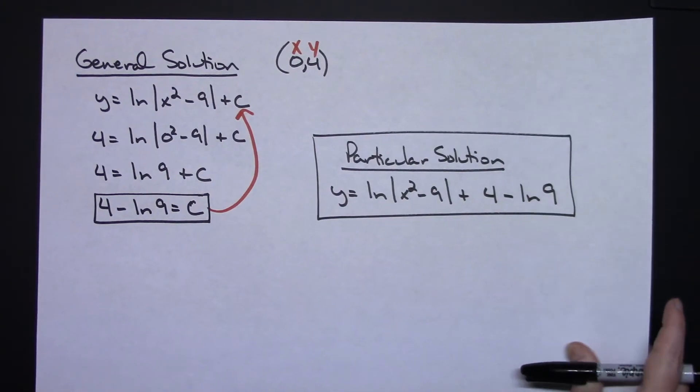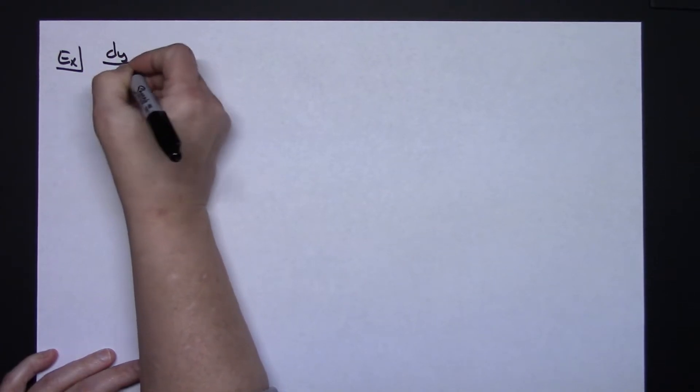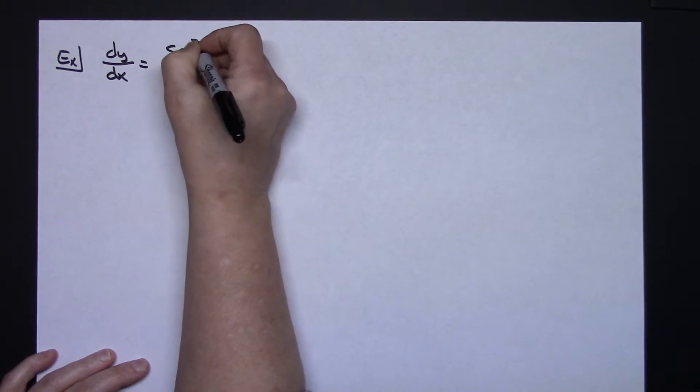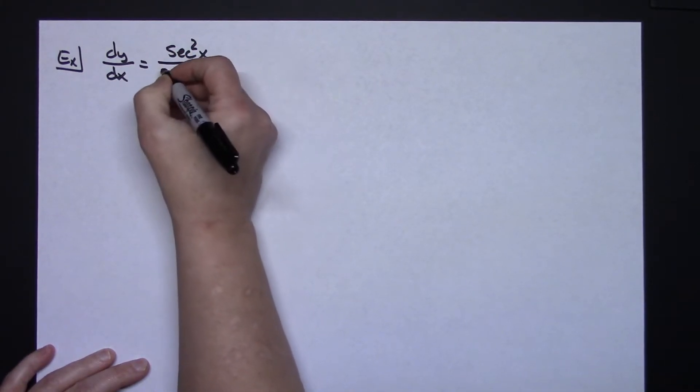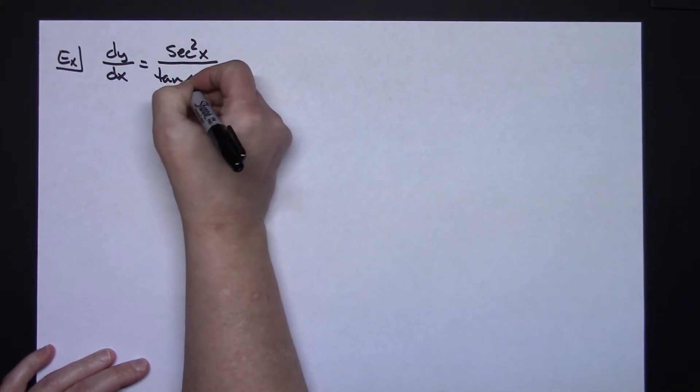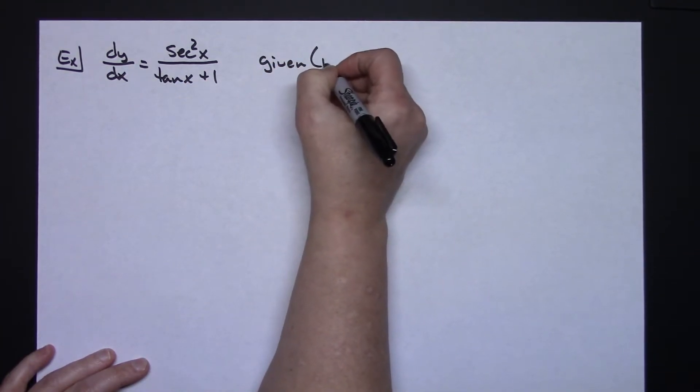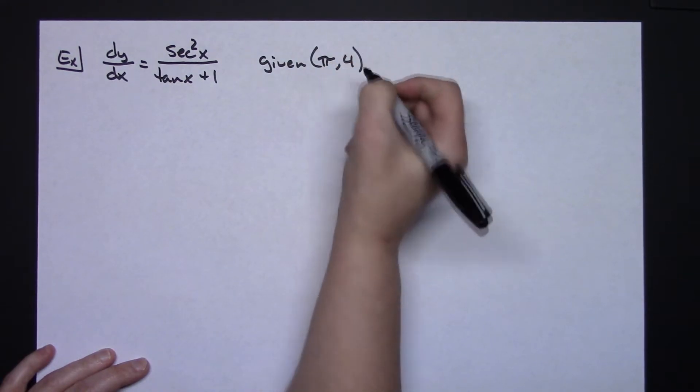That was the first example — straightforward, not too bad. Now let's take a look at one that's a little more challenging, something with some trig functions in it.